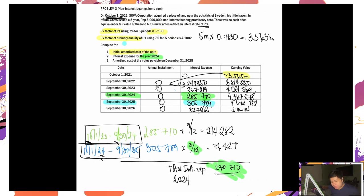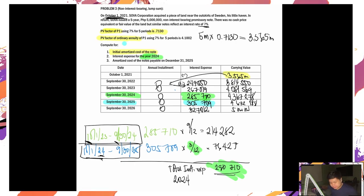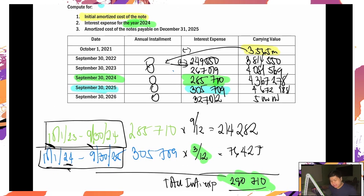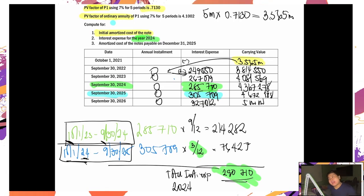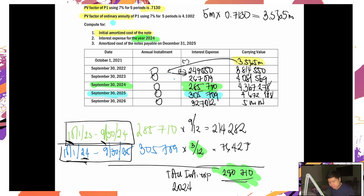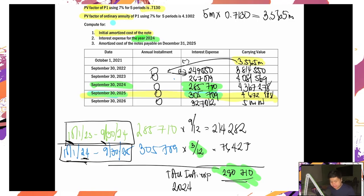Last: amortized cost of the notes payable on December 31, 2025. Napakadali lang. Tingin lang tayo ng pinakamalapit — yung September 30, 2025 entry. Yung 4,672,988 na yan — carrying value as of September 30, 2025.